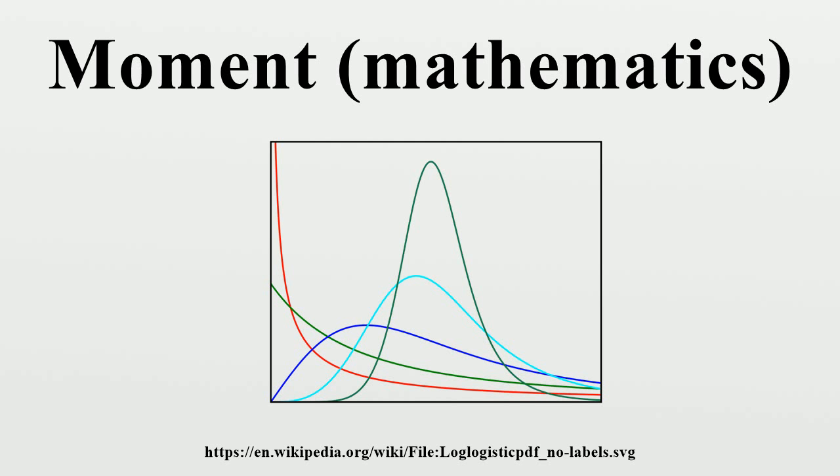the expected value of x to the n. This is called a raw moment or crude moment. The moments about its mean mu are called central moments.